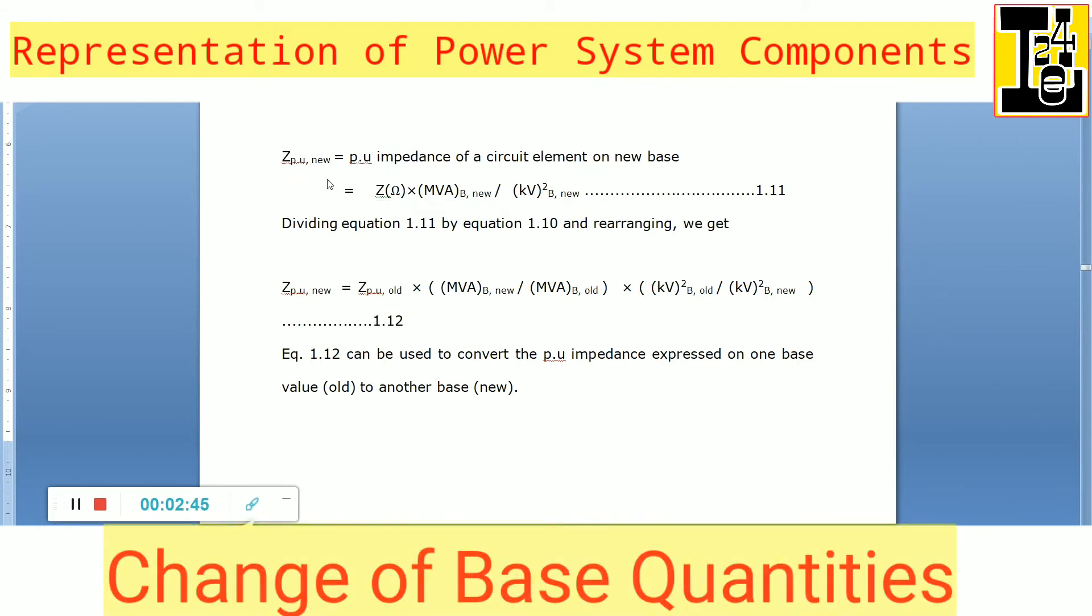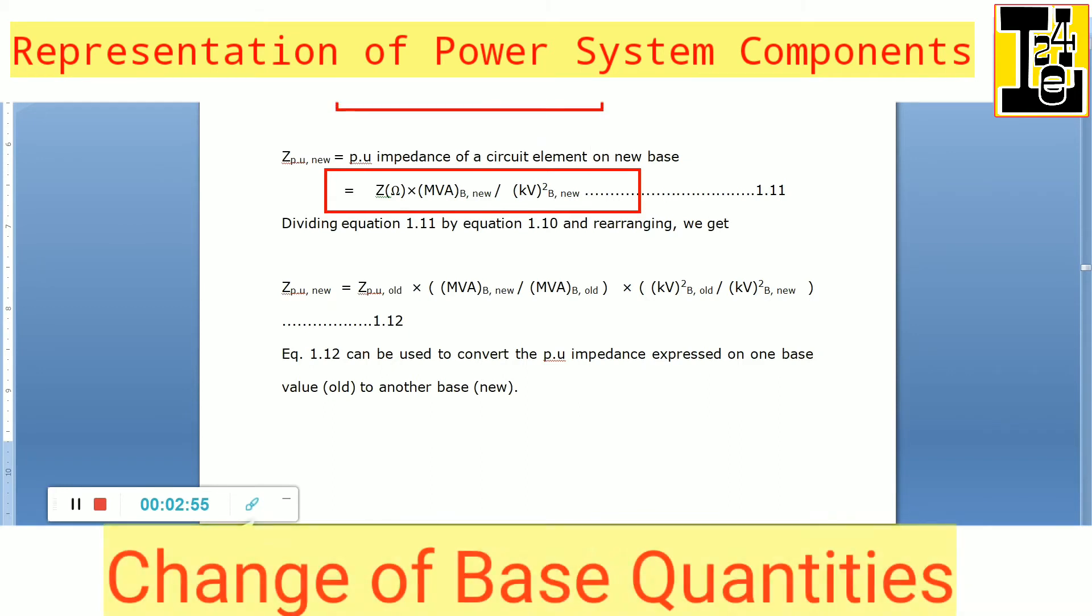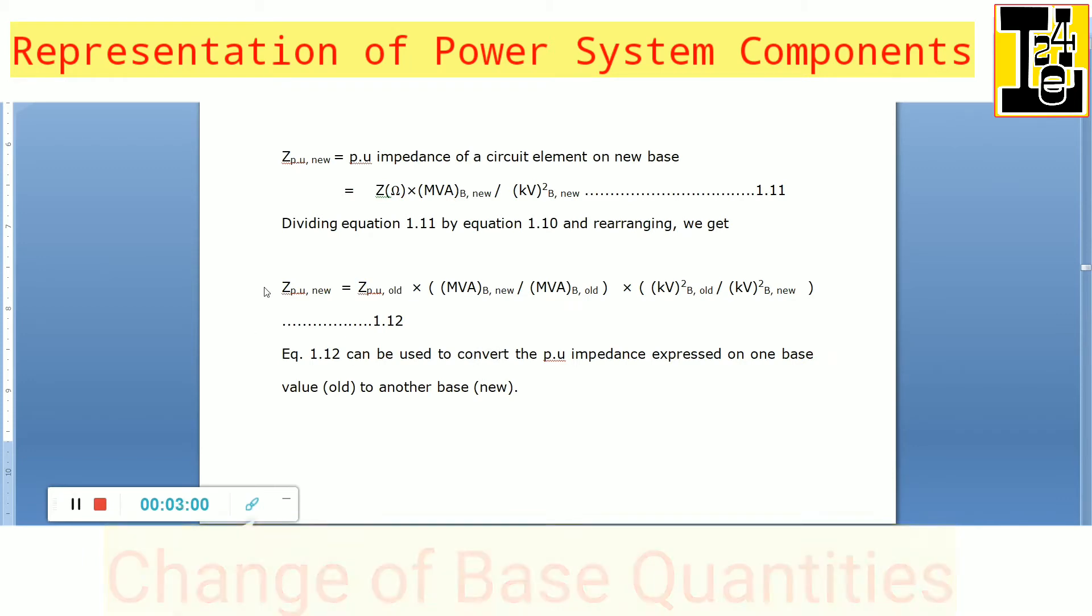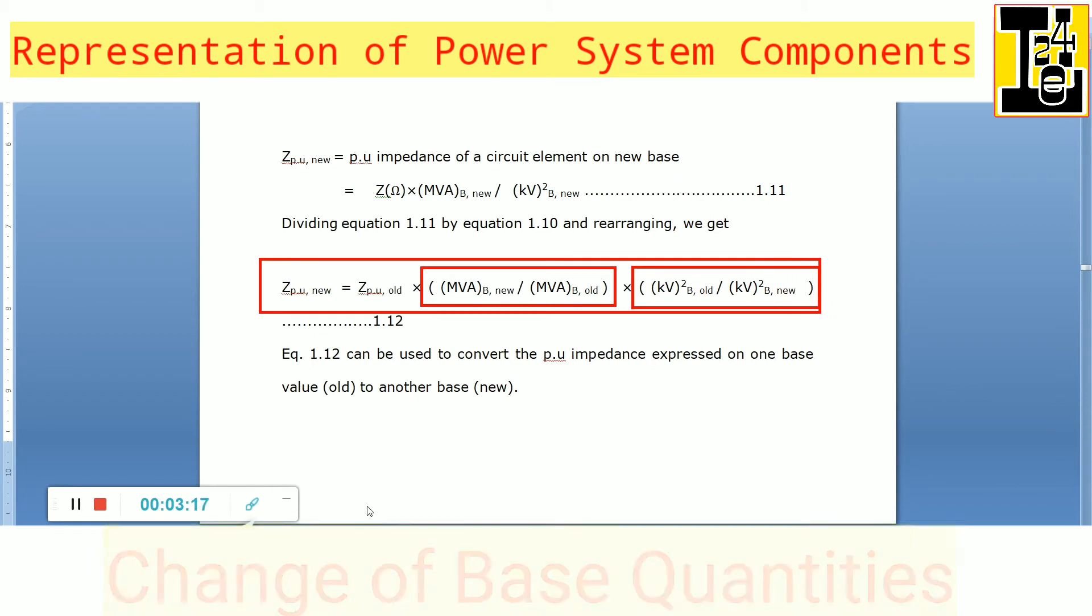So, dividing this expression Z per unit new by Z per unit old and rearranging the expressions, we will get Z per unit new equals Z per unit old into MVA base new divided by MVA base old into KV base old square divided by KV base new square.